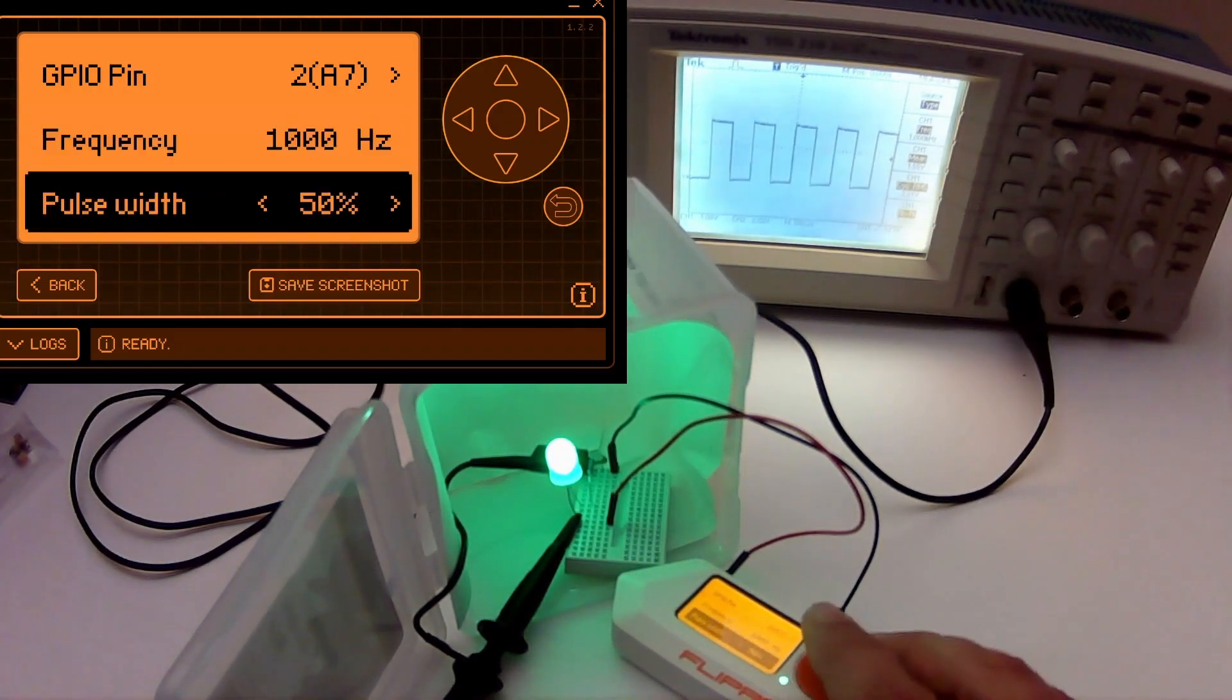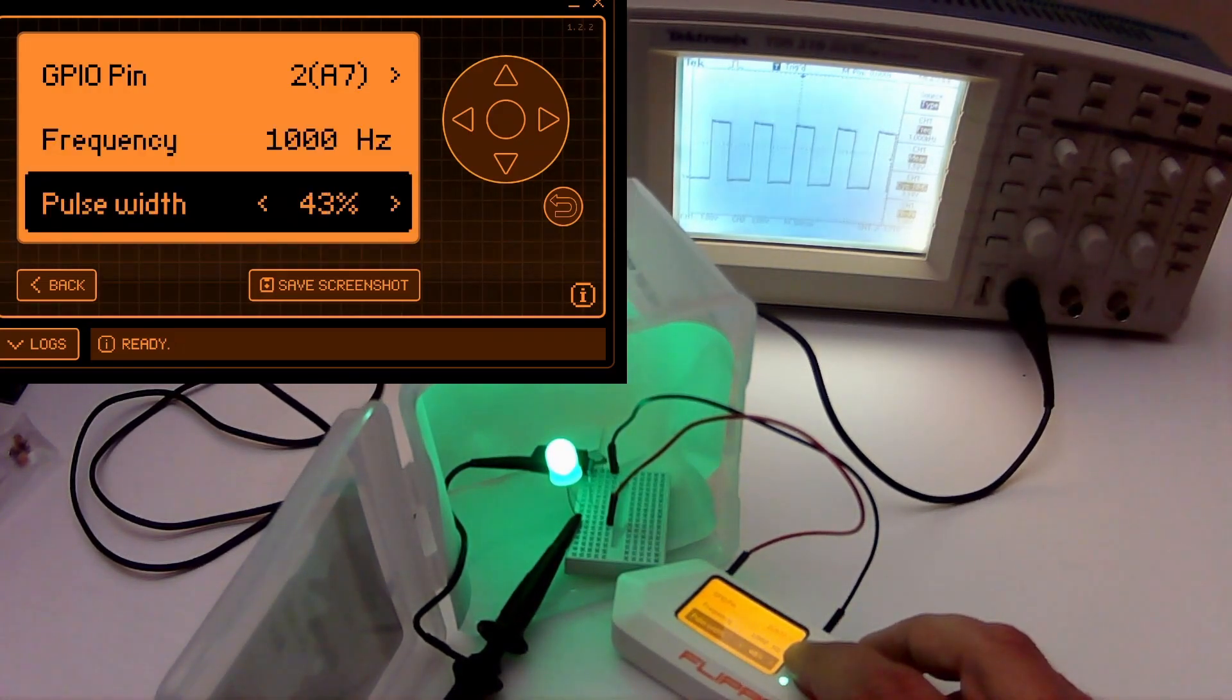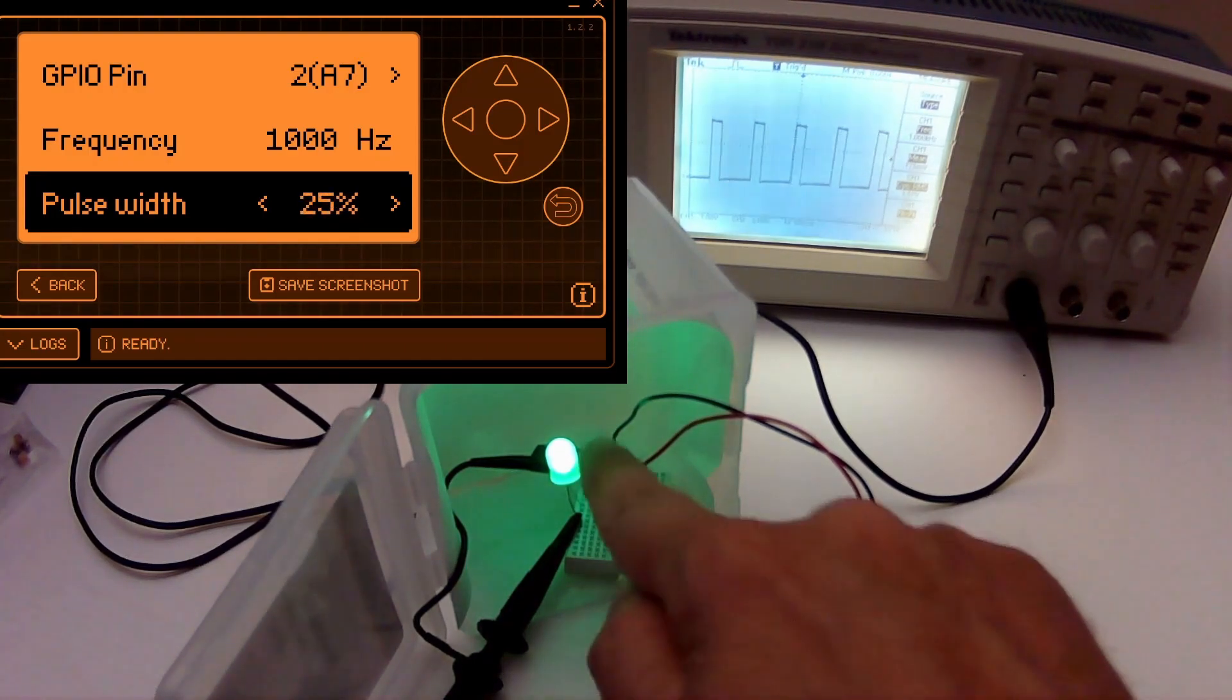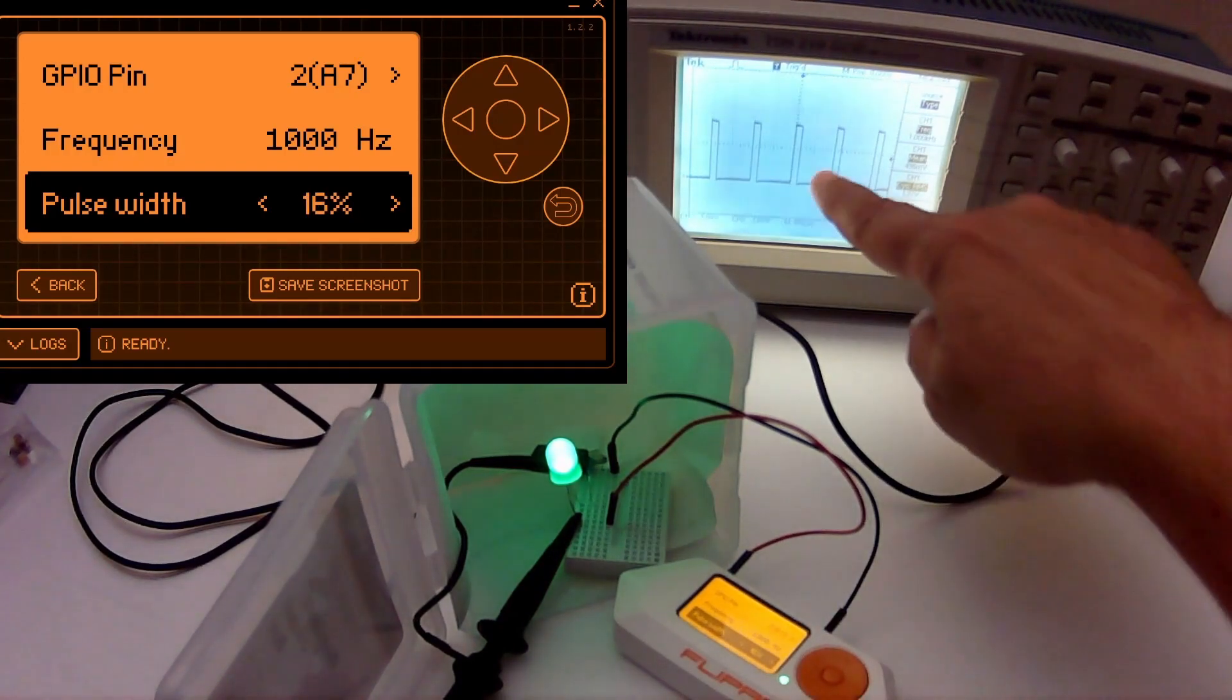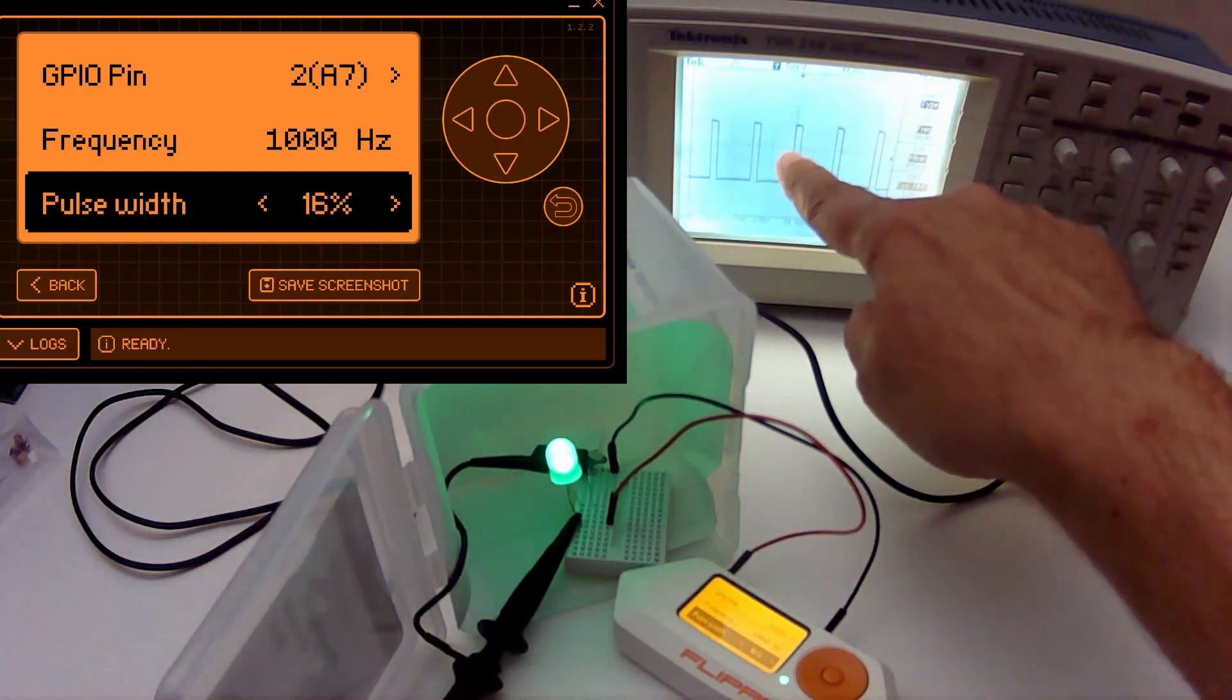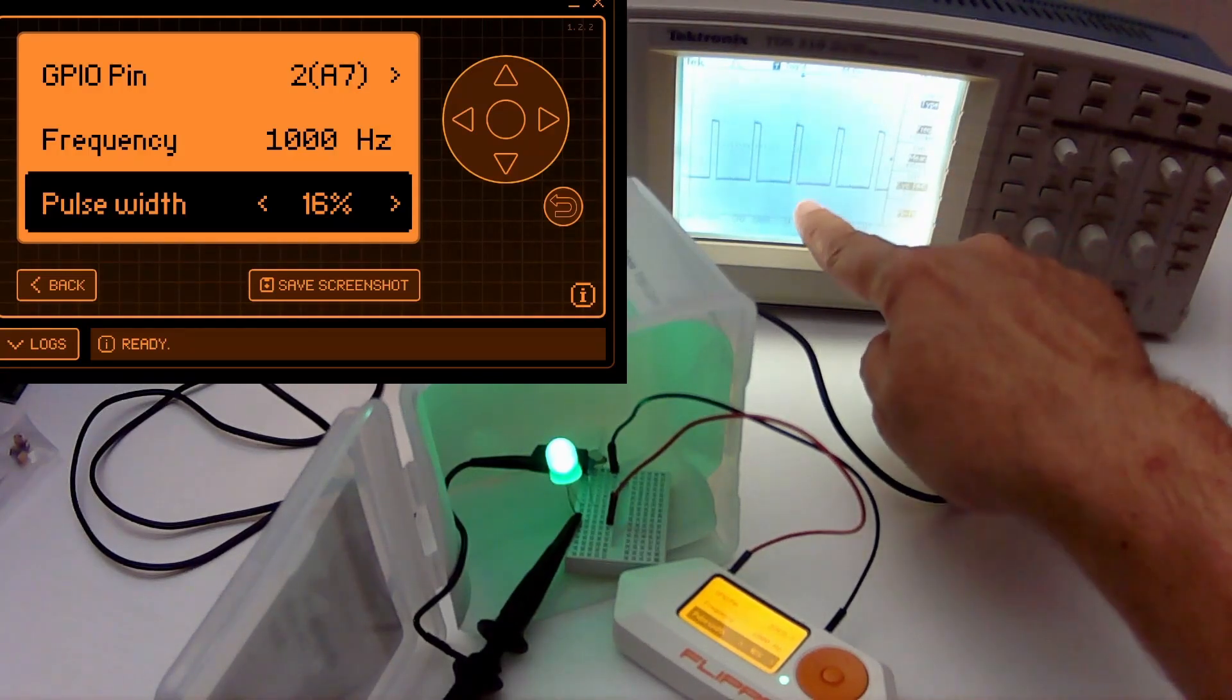I'm going to go to pulse width. Now I'm going to start decreasing the pulse width. You should notice the LED light isn't as bright. You'll also notice the pulse is only on for 16% of the time and the rest of the time it's off.